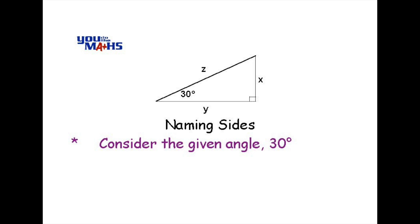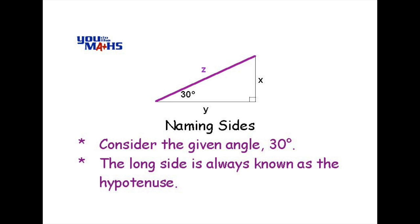The longer side, labeled in purple with the Z next to it, is called the hypotenuse. In any right-angled triangle, the longest side is always called the hypotenuse.